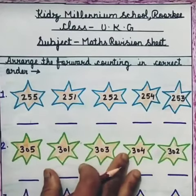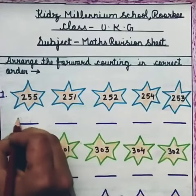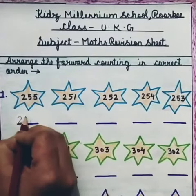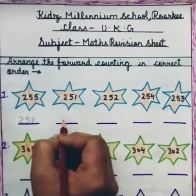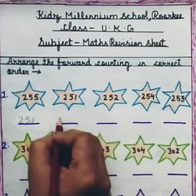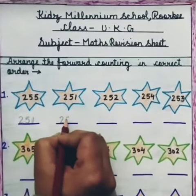So we will arrange them. First of all, 251 will come, then after 251, as you all know, 252 will come.